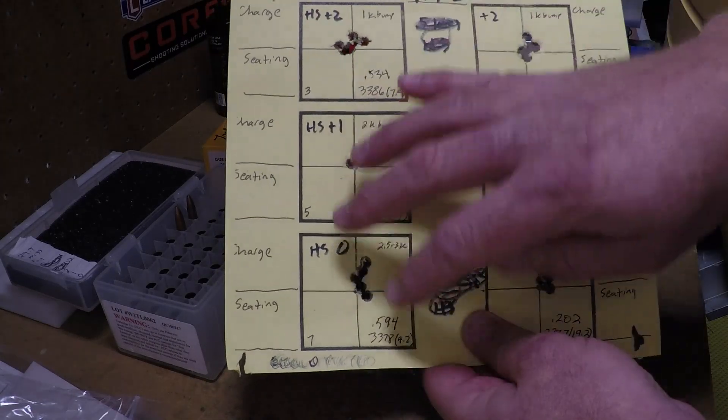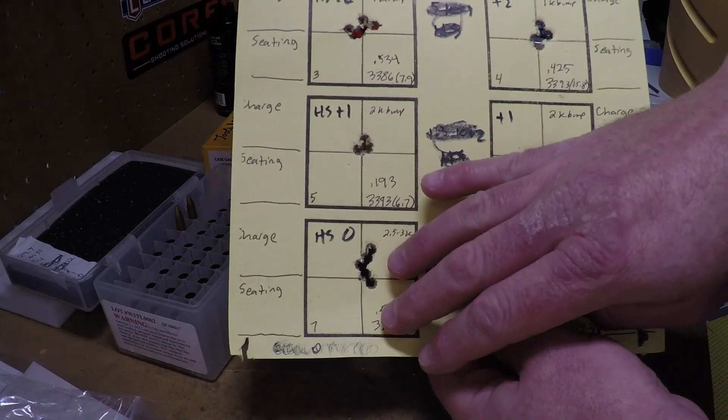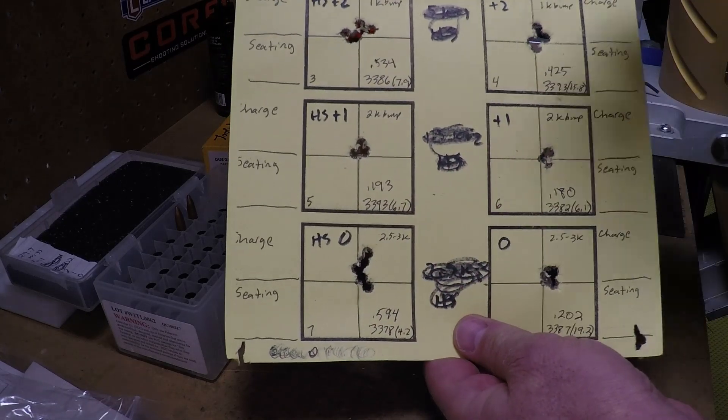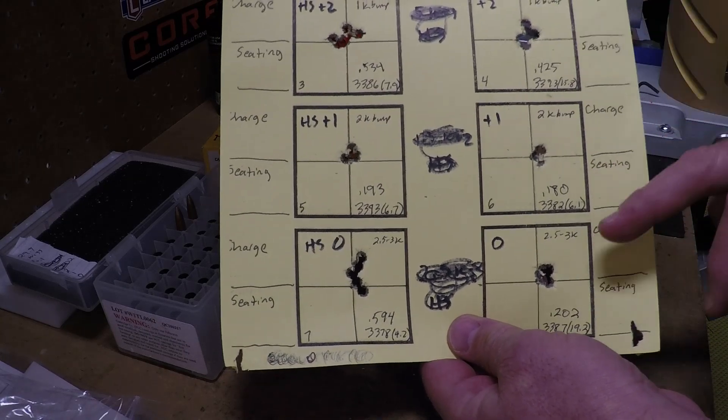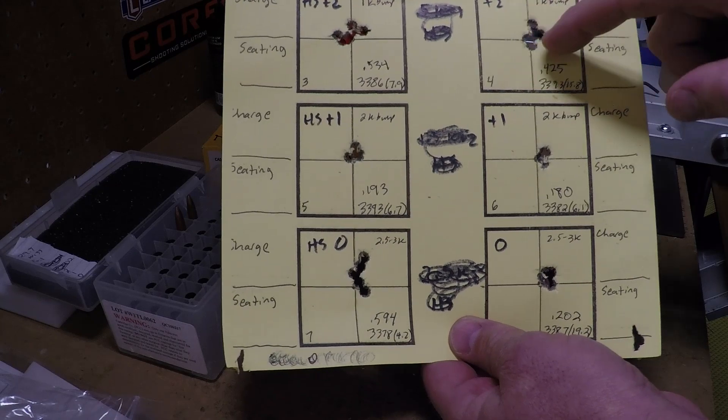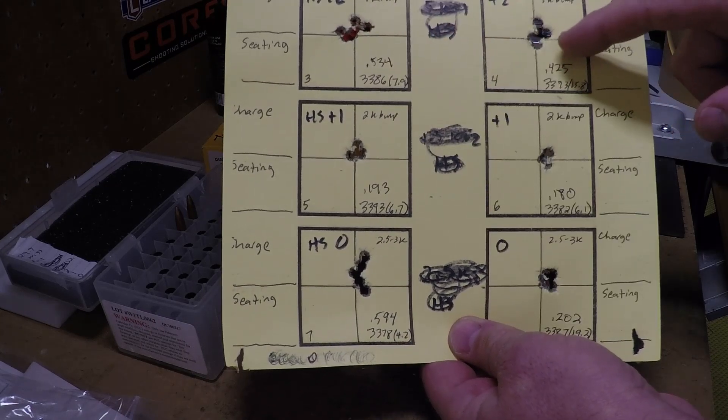This side here, these groups were shot in wind. There was lots of wind today at the range. Shot these three groups in the wind, and then all of a sudden the conditions died down, and I shot these three groups in pretty much no wind. But you can see here how just barely bumping it at a half a thousandths to a thousandths, the groups were pretty wide and large.